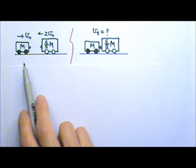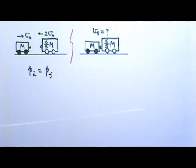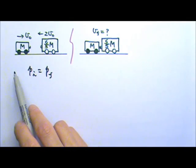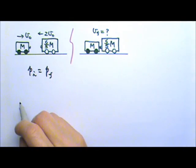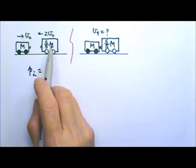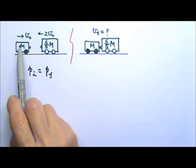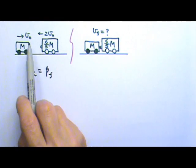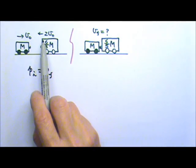It's a collision problem, so I can use conservation of momentum. When I write the momentum conservation equation, what do you think I have to be careful with? I have to pay attention to the direction. If I say this velocity to the right is positive, I have to say the velocity to the left is negative.